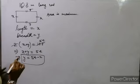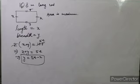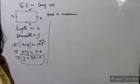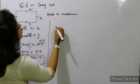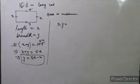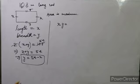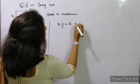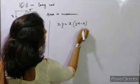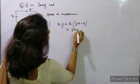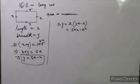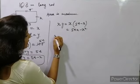Now we have to find the maximum area. Area = length × breadth = x × y. Substituting y = 54 - x, the area = x(54 - x) = 54x - x². So f(x) = 54x - x².